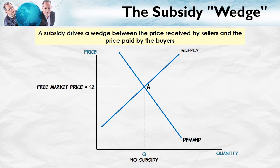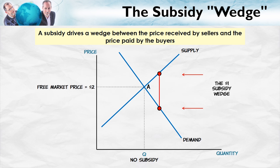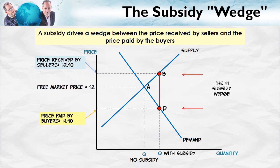We can use the same wedge analysis as before, except we're going to drive the wedge into the diagram from the right-hand side. Consider the height of this wedge — let's suppose that's $1. We drive it in until the top hits the supply curve and the bottom hits the demand curve. At the top, at point B, this tells us the price received by sellers — suppose that's $2.40. The bottom, at point D, tells us the price paid by buyers — $1.40. Notice that the price received by sellers is $1 more than the price paid by buyers, the $1 coming from the subsidy.